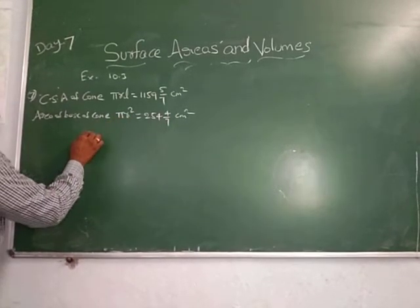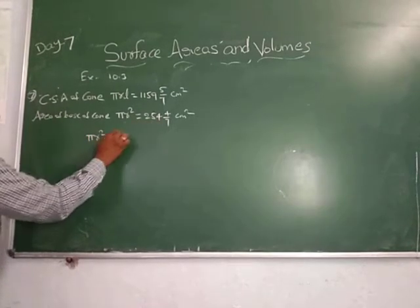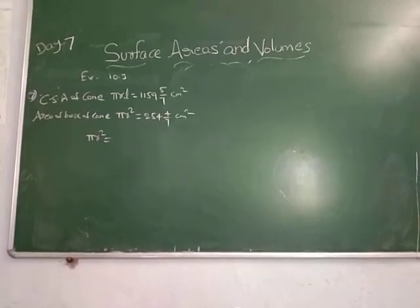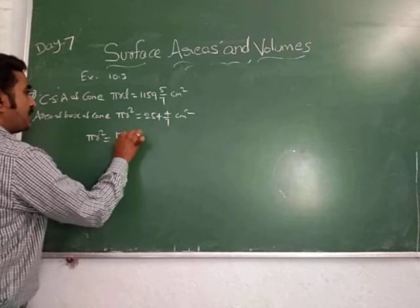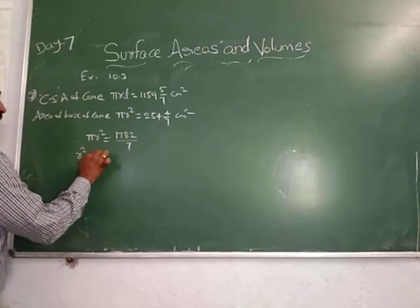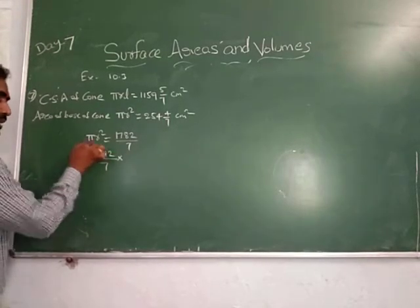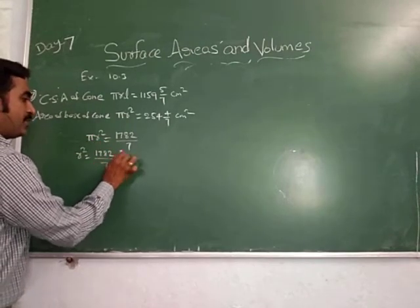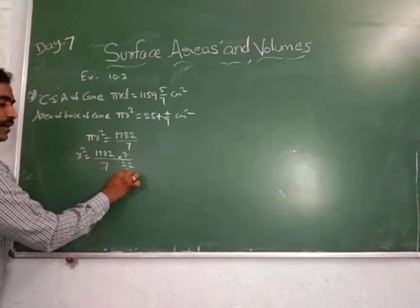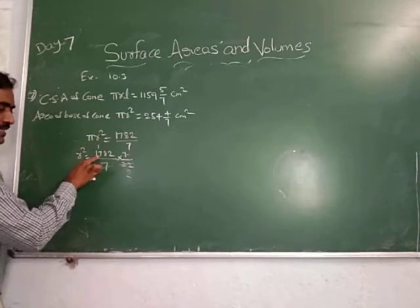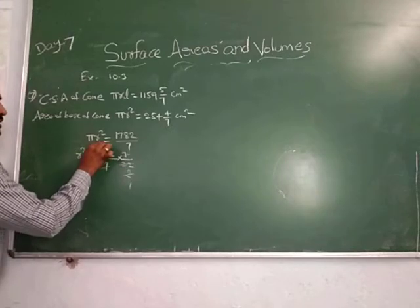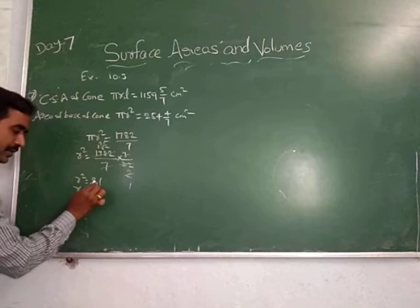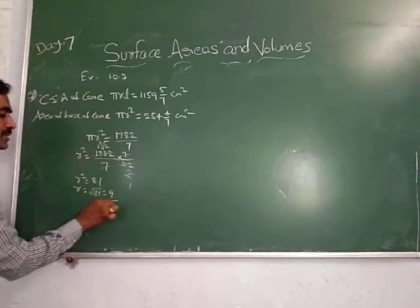From this, can we find the radius? Yes. Pi R square equals the value from the fraction: 254 into 7 plus 4, that is 1782 by 7. So R square equals 1782 by 7 into 7 by 22. After cancellation of 7 and simplification, R square equals 81. Then R equals root 81, which is 9. This is the radius of the cone.